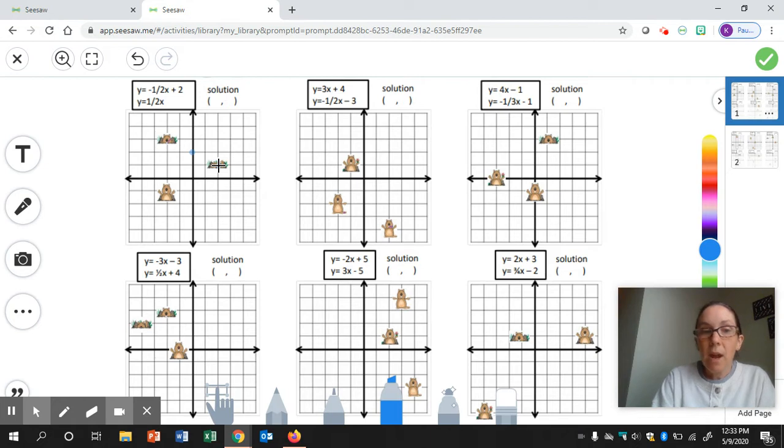Since I have room here on the graph, I'm going to make a third point. The slope is a constant, it doesn't change, so I'm going to go down one and right two again, and put a third point.